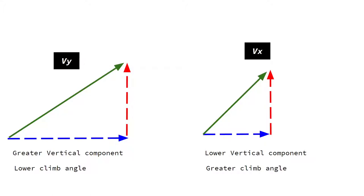Quick brief: VY, VX. VY is the best rate of climb speed — we're looking for the greatest vertical component, so it'll be greater than VX, but as a result the angle will be lower. So we'll climb faster, but we'll cover more ground as we do so than we would on VX, which is the best angle speed. So we'll have a lower vertical component but a greater climb angle. At VX, we will take longer to get the same vertical displacement than with VY, but we would travel a shorter distance to do so.